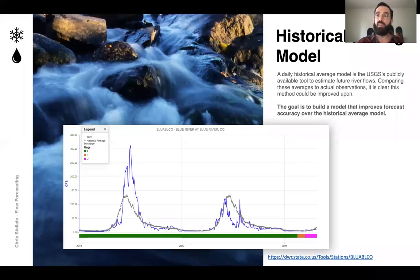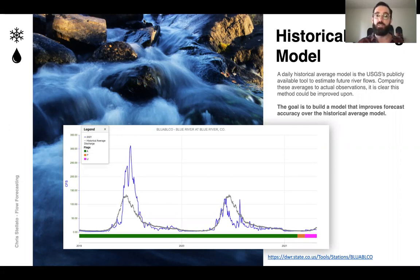What's currently available from the USGS is just a historical average. This screenshot is what you would see if you went to check the stream gauge on the website. The historical average is the gray line — as you can see, it's okay, but it doesn't fit the actual observations very well. So our goal is to improve upon that.